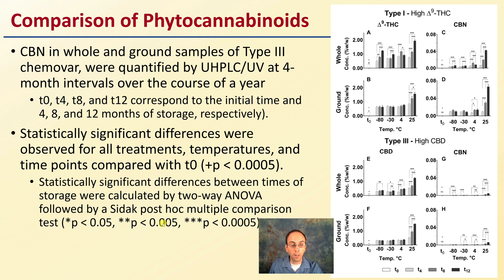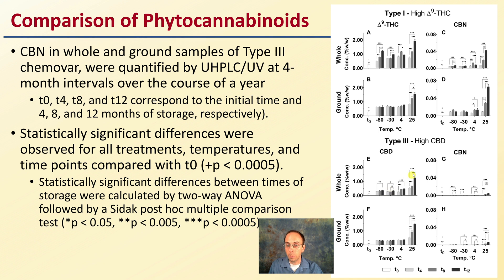We see the different P-value levels indicated by asterisks. Looking at whole plant for Delta-9 THC and CBN, and then ground plant — same thing. The general trend we notice is that the 25 degrees Celsius temperature had the greatest degree of breakdown, while the colder temperatures were relatively similar across the board. That held true both for Delta-9 THC as well as CBD.